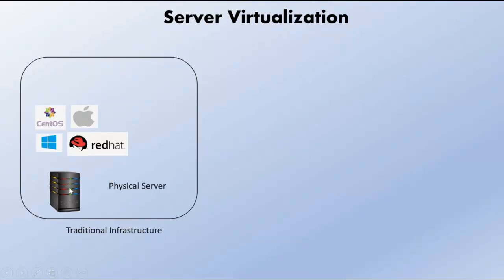Suppose I want to run Windows on this physical server, and then also want Red Hat, Mac, or CentOS to run on the same physical server — that was not possible. The traditional way was to buy three new servers and then install one operating system on each server. So to run four operating systems, you had to buy four physical servers, which was a very costly approach for a company.